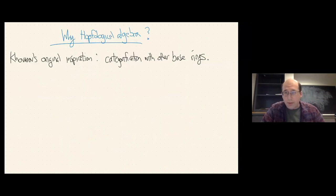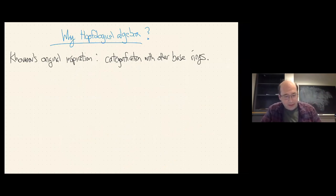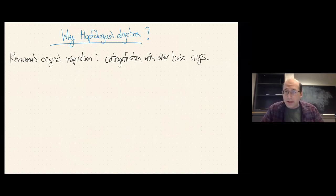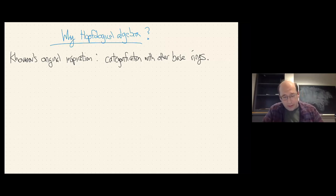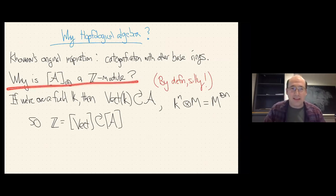What does it take? Why would we do hopfological algebra? Khovanov's original inspiration was categorification for other base rings — instead of categorifying the generic quantum group at generic q, you want to categorify quantum groups at roots of unity. Let me remind you why you normally get Z-modules or Z[q, q⁻¹]-modules in additive categorification: the naive answer is you defined it to be a Z-module, taking formal Z-combinations of stuff. Really it should be over the natural numbers.